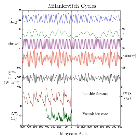In addition, the orbital ellipse itself precesses in space, in an irregular fashion, completing a full cycle every 112,000 years relative to the fixed stars. Apsidal precession occurs in the plane of the ecliptic and alters the orientation of the Earth's orbit relative to the ecliptic. This happens primarily as a result of interactions with Jupiter and Saturn. Smaller contributions are also made by the Sun's oblateness and by the effects of general relativity, well known for Mercury. Apsidal precession combines with the 25,771.5-year cycle of axial precession to vary the position in the year that the Earth reaches perihelion. Apsidal precession shortens this period to 23,000 years on average.